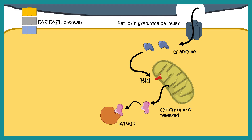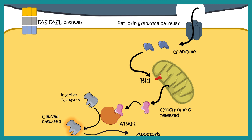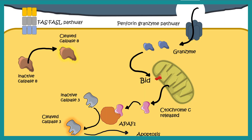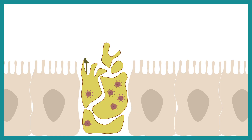Cytochrome c interacts with APAF1 to activate caspase 3 cleavage, triggering apoptosis. Additionally, FAS and FAS ligand interaction can trigger caspase 8, which in turn cleaves caspase 3, ultimately evoking the apoptosis program. The virus-infected cell dies, but the cells in the surrounding vicinity are saved. Apoptosis is therefore an overall protective mechanism during infection as well.